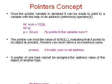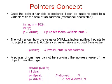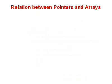A pointer of one type cannot be assigned the address value of an object of another type. For example, if we have declared a pointer p and a normal variable p_val, then p = &p_val is allowed, but assigning p the address of a different type variable is not allowed.